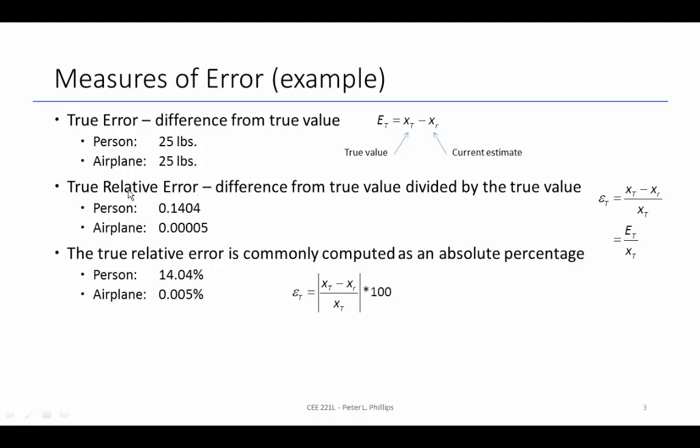The magnitude really does matter. So the true relative error is the difference between the true and the current approximation divided by the actual true value. So we'll call that epsilon T and it's the true error divided by the true value.